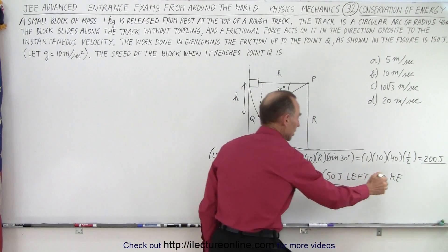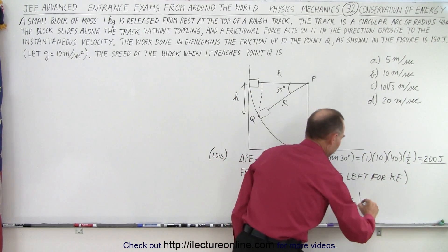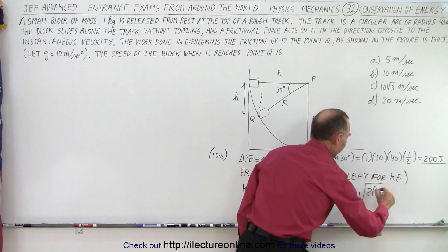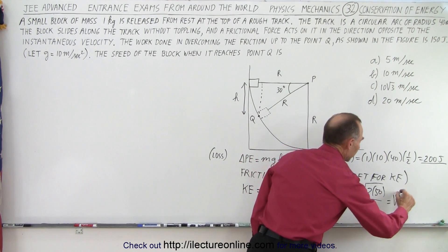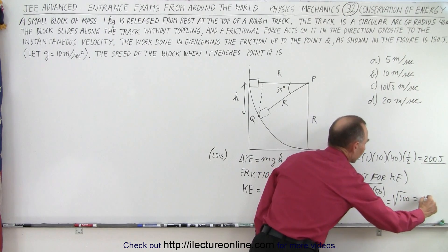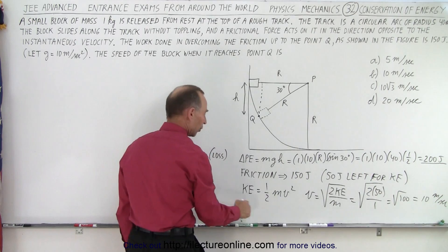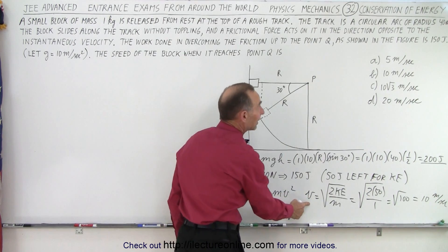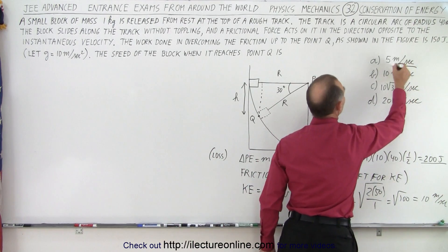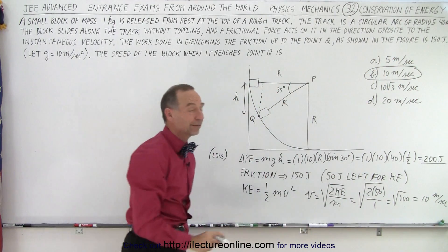And so the kinetic energy is 50 joules. So we get the square root of 2 times 50 divided by 1, which is the square root of 100, which is 10, and of course that would be meters per second because we're looking for velocity. And the answer then must be B, because that tells us 10 meters per second.